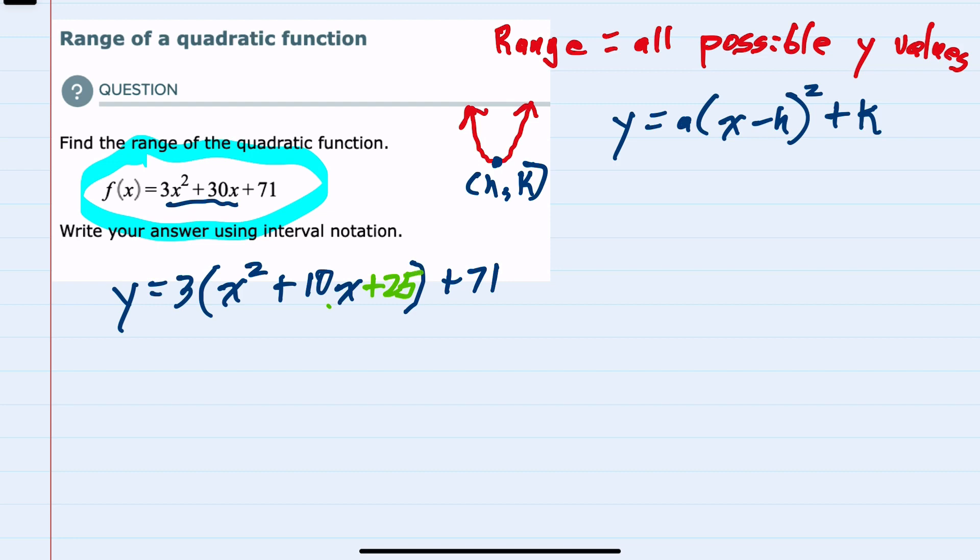But I can't just randomly add 25. Whenever I put that plus 25 there, that 3 would also get distributed to the 25, meaning that I just added 75 to the right-hand side. I would want to also subtract 75 so that I'm not actually altering the equation.